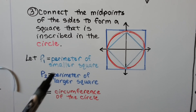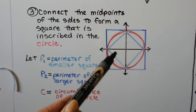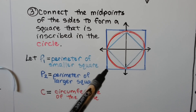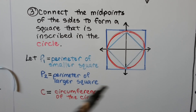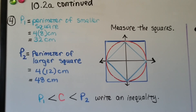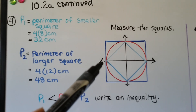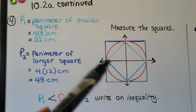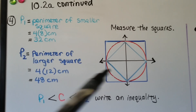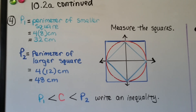We let P₁ be the perimeter of the smaller square and P₂ be the perimeter of the larger square, and c is the circumference of the circle. The smaller square has 4 sides, each 8 centimeters, so its perimeter P₁ is 4 × 8 = 32 centimeters.